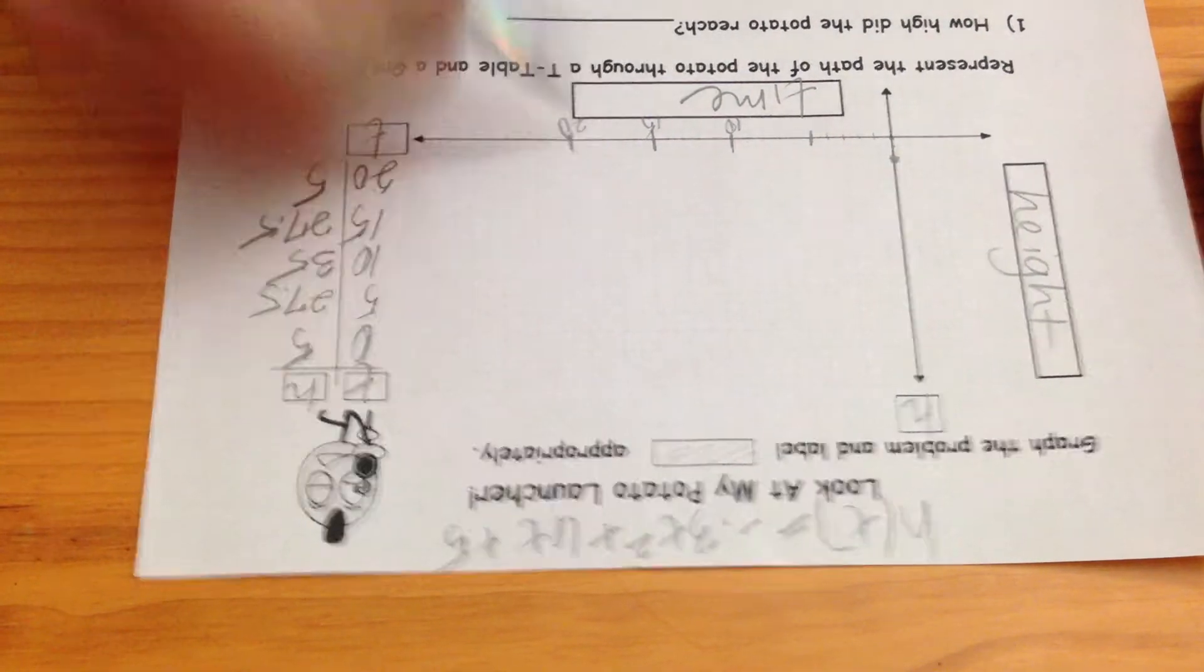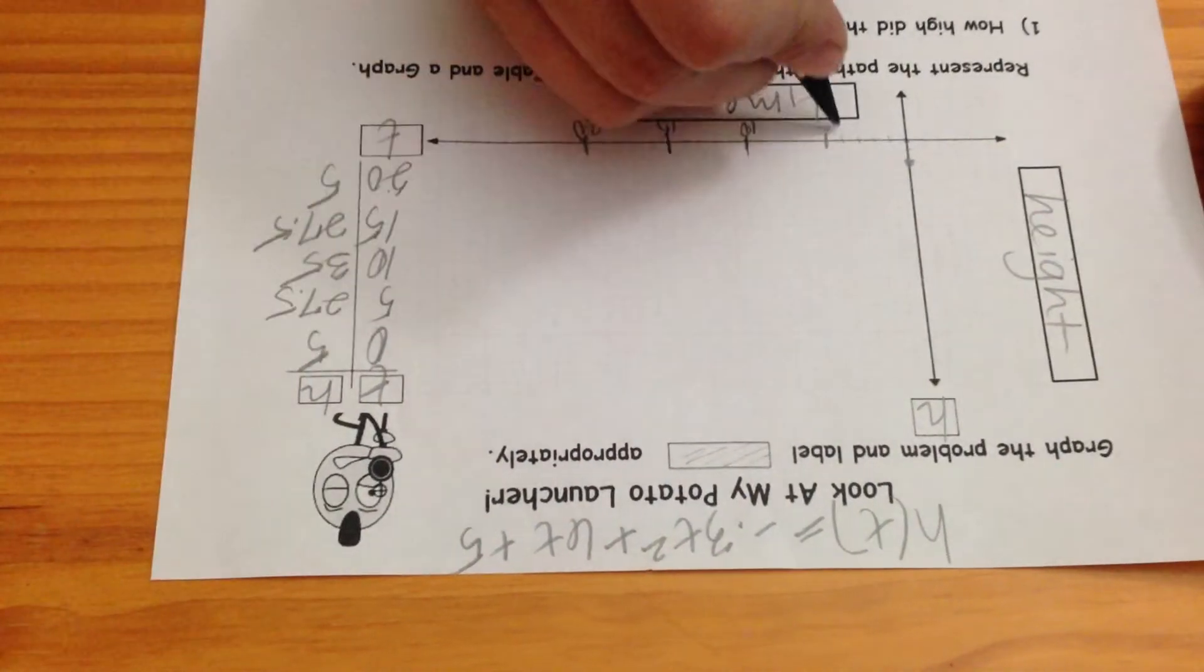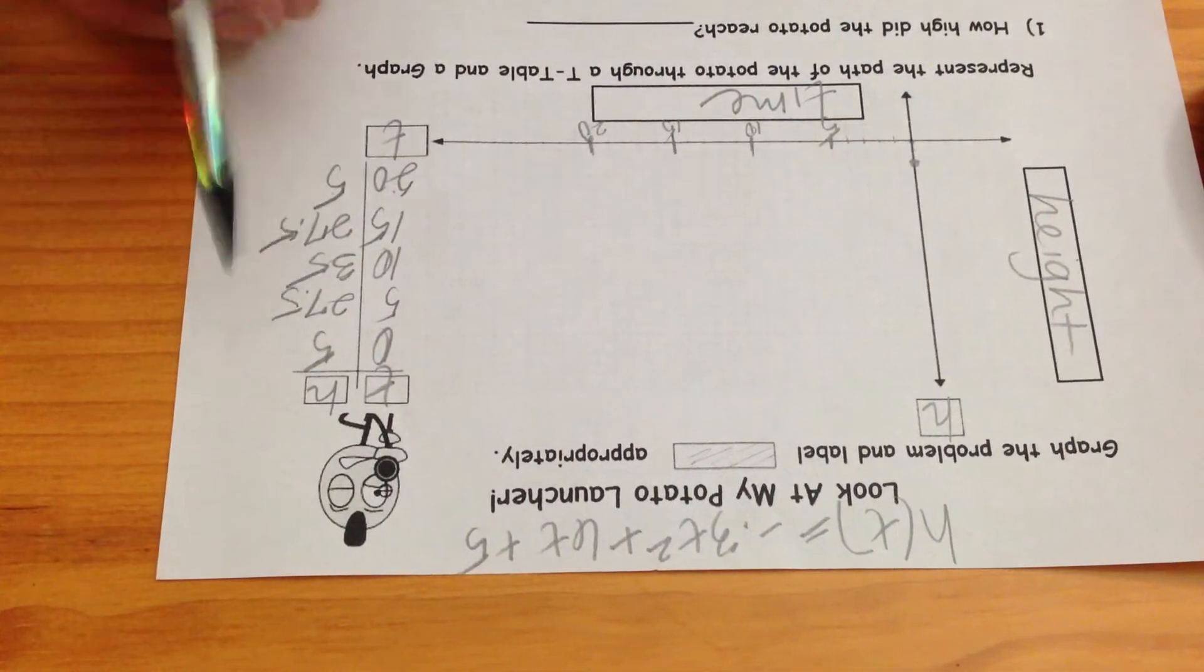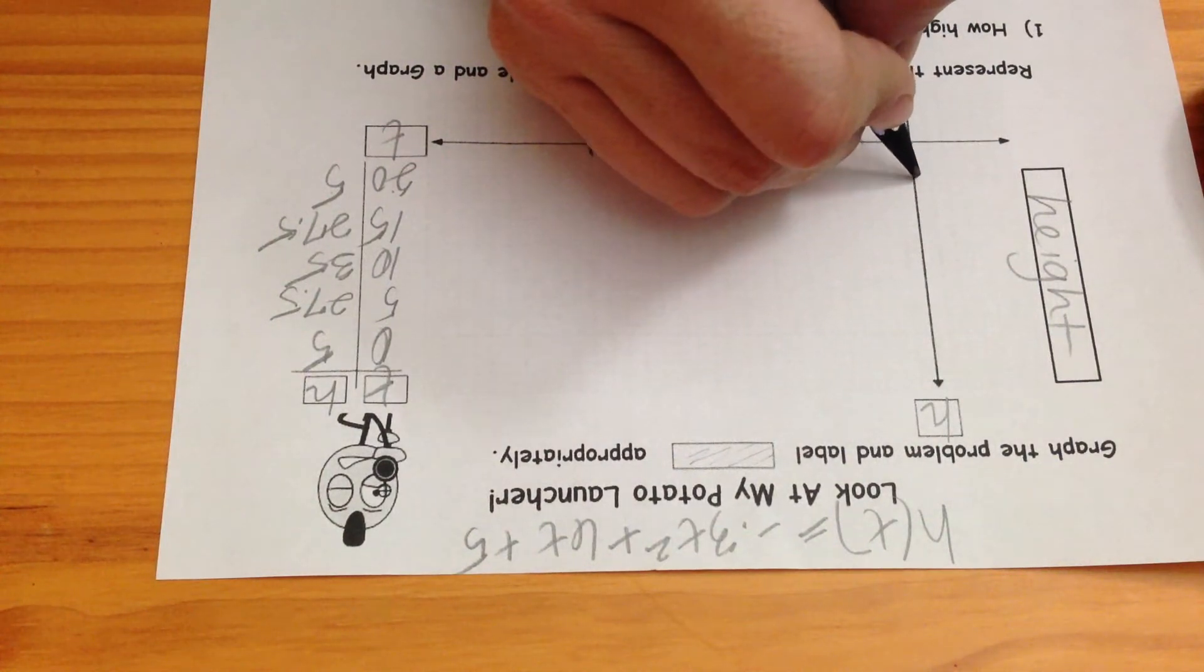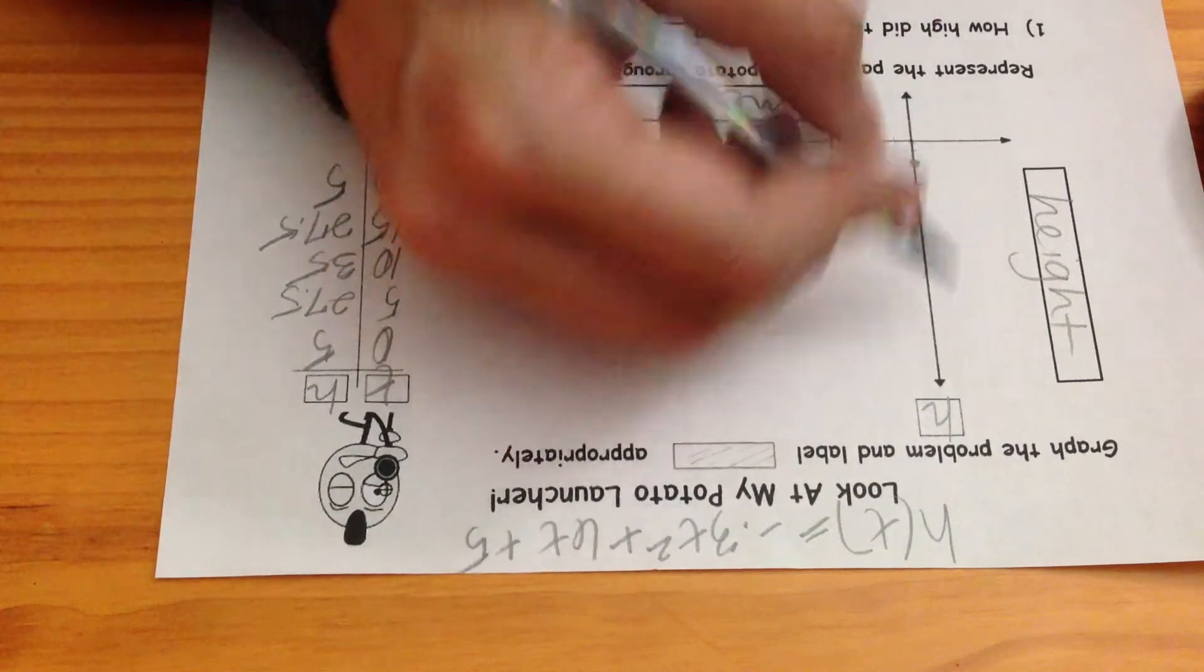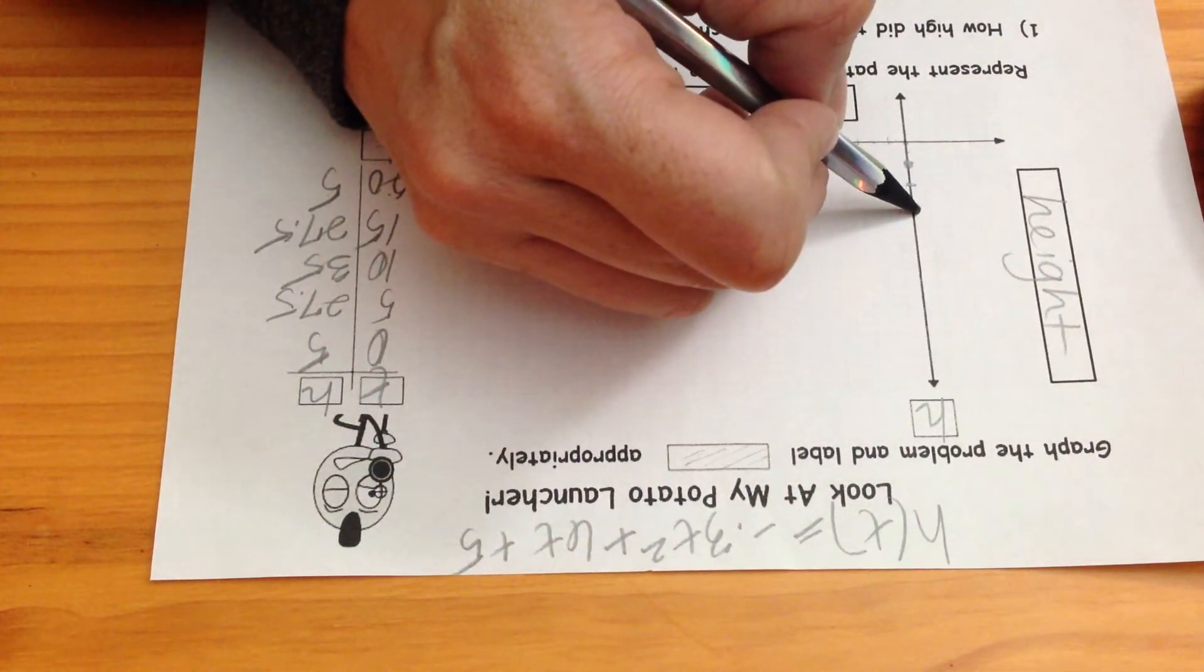Cool. Alright, represent the path. This is 5. 5 and 27 and a half. I was going by 2. It's 2, 4, 5, 6, 7, 8, 10, and I go up again.